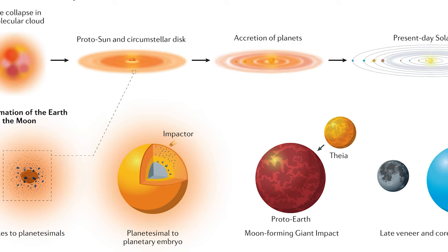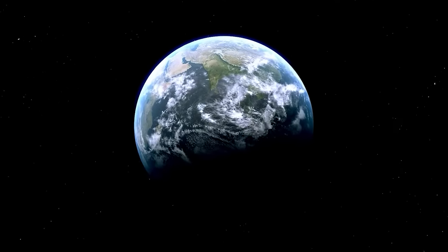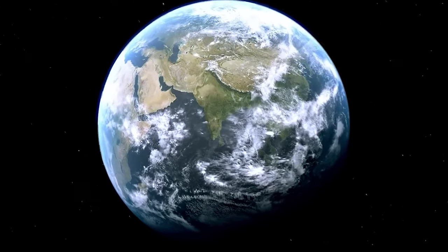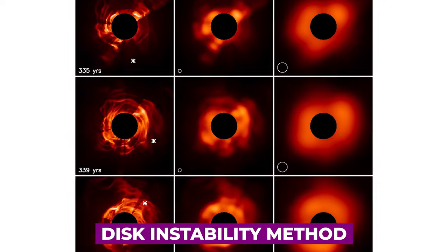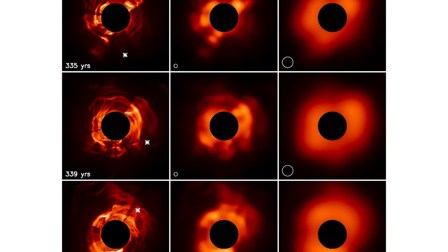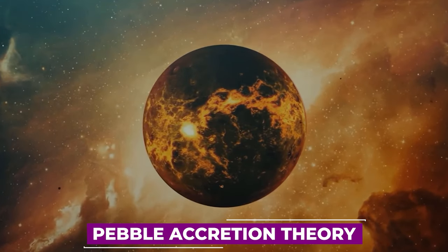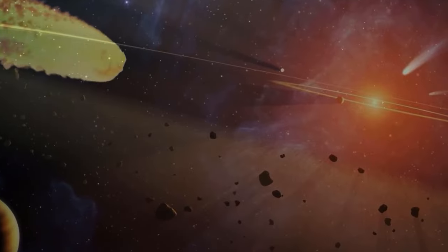The first and most widely accepted theory is the core accretion model. It works well to explain the formation of terrestrial planets like earth, but doesn't fully account for giant planets. The second theory, called the disk instability method, may account for the creation of larger planets. These two leading theories are joined by the pebble accretion theory, which helps to additionally explain how different objects might form.